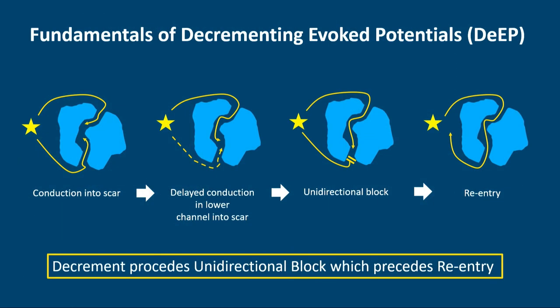The fundamentals of deep mapping: with a scar and a channel, a stimulus results in two wavefronts—one at the top and one at the bottom. As you shorten the coupling interval between stimuli, there is differential delay between activation into that scar, with one limb conducting normally and another slowing down. With further extra stimuli or more aggressive coupling intervals, one limb will block. Unidirectional block is the prerequisite to re-entry.